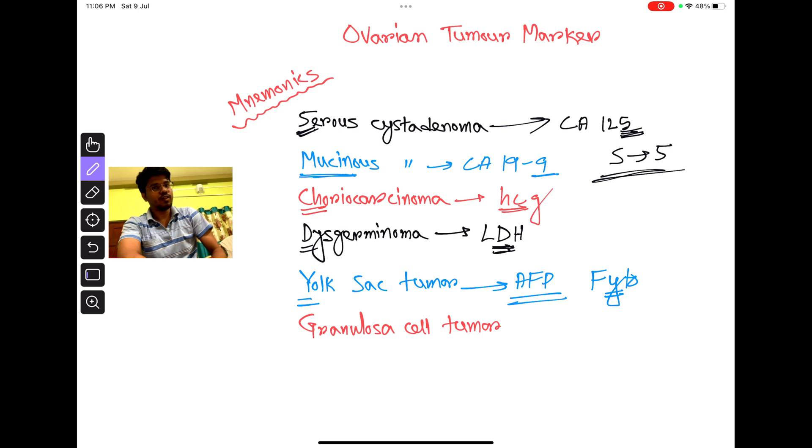Yolk sac tumor marker is AFP. How you remember: P to write down F-Y-T-O, Y for yolk sac tumor.